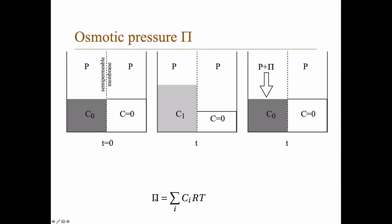One method to estimate osmotic pressure is the equation pi equals the sum of concentration times RT, where the concentration counts all species in solution. For a salt like sodium chloride that dissociates into sodium and chloride ions, you must count both species separately. This equation resembles the ideal gas law because it is derived from it — since we are dealing with solutions rather than gases, it is not perfect, but in many situations it gives a pretty close value.